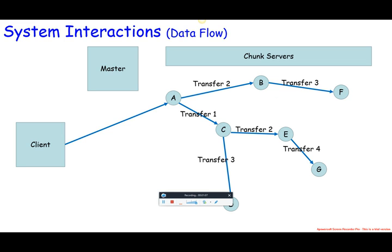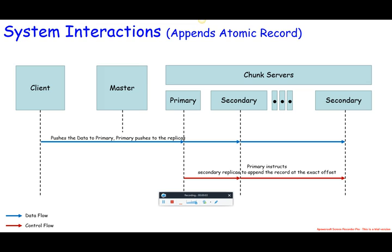In a record append, the client specifies only the data and GFS chooses the offset when appending. The maximum size of an append record is 16 MB. The client pushes data to all replicas of the last chunk of the file, then sends the request to the primary replica. The primary checks if the data size would cause the chunk to exceed the maximum size of 64 MB. If so, it pads the chunk to max size, tells secondaries to do the same, and replies to the client to retry on the next chunk.